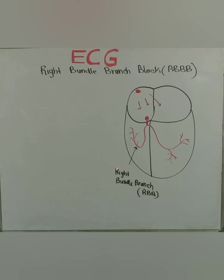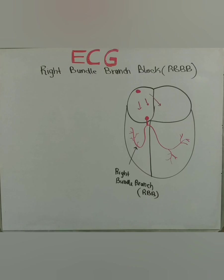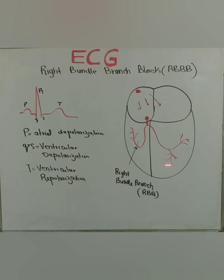Along with that, this impulse also enters the right bundle branch and the left bundle branch. At the end of these bundle branches there are Purkinje fibers which are embedded into the ventricular muscle, and when the ventricular muscles are depolarized, there is formation of the QRS complex as a result of this conduction system.